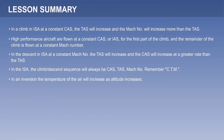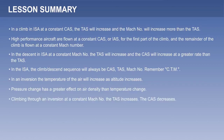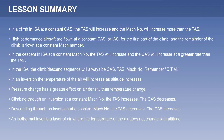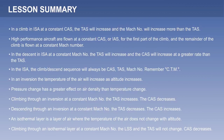In an inversion, the temperature of the air will increase as altitude increases. Pressure change has a greater effect on air density than temperature change. Climbing through an inversion at a constant Mach number, the TAS increases and the CAS decreases. Descending through an inversion at a constant Mach number, the TAS decreases and the CAS increases. An isothermal layer is a layer of air where the temperature does not change with altitude. Climbing through an isothermal layer at a constant Mach number, the LSS and TAS will not change, and CAS decreases.